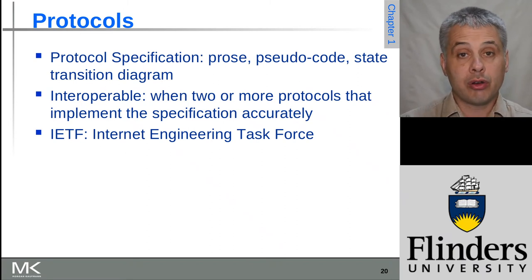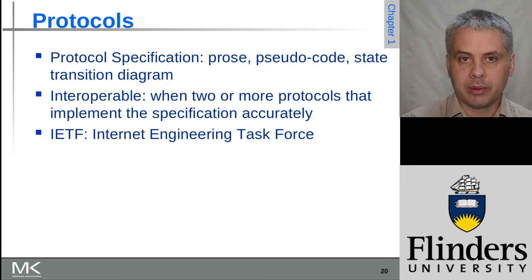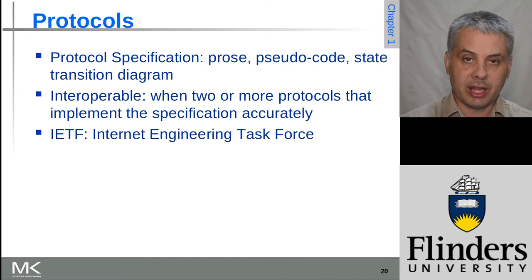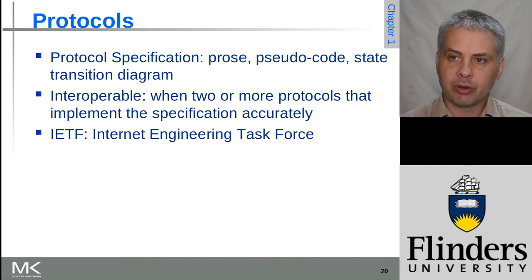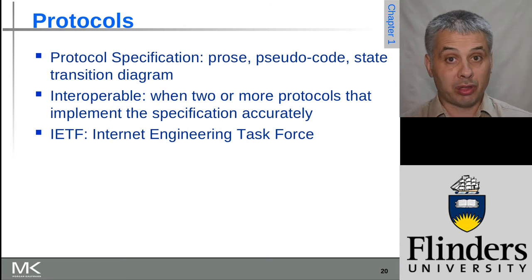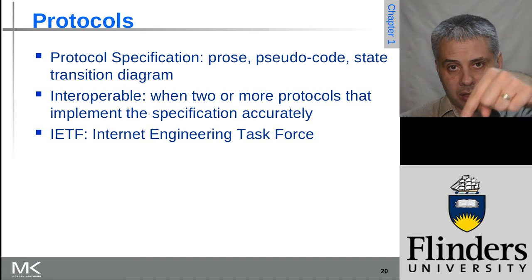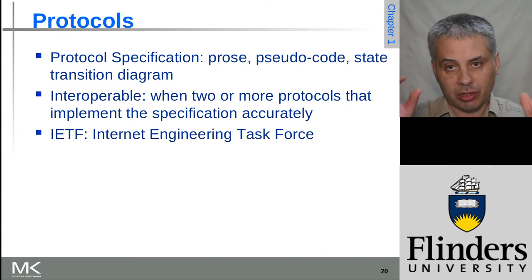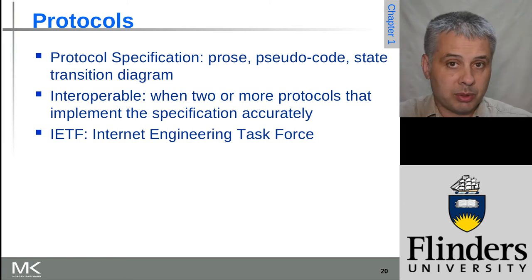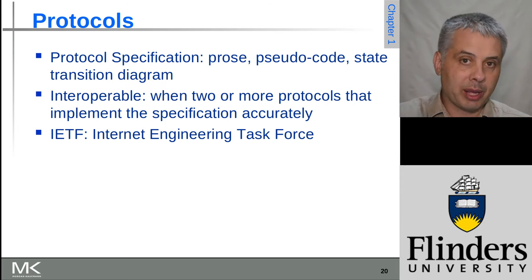Then we move from that into pseudocode, where we start describing the protocol more algorithmically. This often helps pin down corner cases that need to be thought about carefully to make it work reliably. The next stage is to come up with a state transition diagram, where the protocol is in a particular state until it gets a request, sends a message, receives a message, hits a timeout, or some other action occurs. Once it can be described as a state transition diagram, it's ready to be implemented.